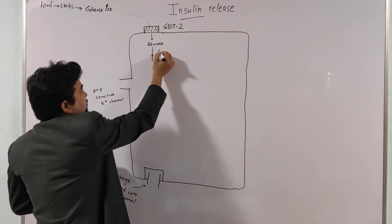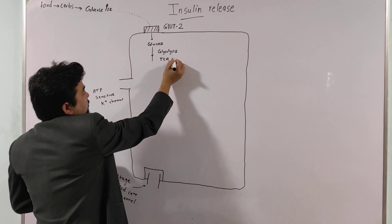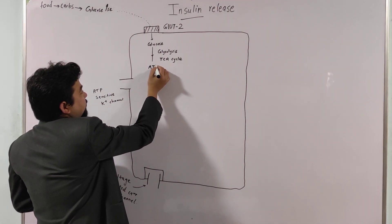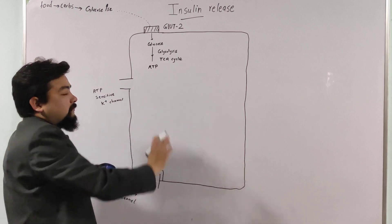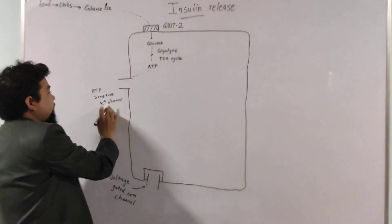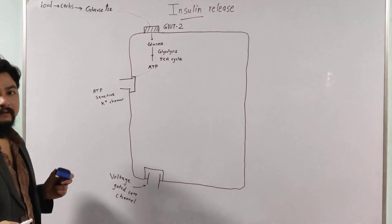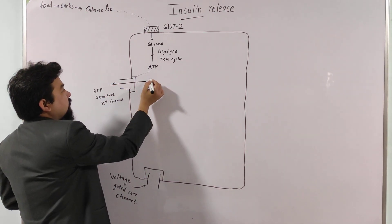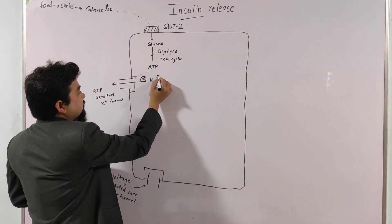Once inside, glucose undergoes glycolysis and the TCA cycle to generate energy in the form of ATP. This ATP then facilitates the closure of the ATP-sensitive potassium channel — that means ATP closes this channel. When this channel gets closed, potassium cannot come out of the cell, and the concentration of potassium increases inside the cell.